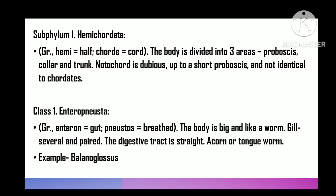Class 1 is Enteropneusta — 'enteron' means gut, 'pneustos' means breathed. The body is large and worm-like, gill slits numerous and paired, alimentary canal straight. Also called acorn or tongue worms. Enteropneusta includes three families, 15 genera, and 70 species. For example, Balanoglossus is the example of Enteropneusta.